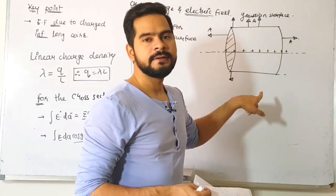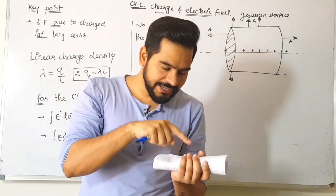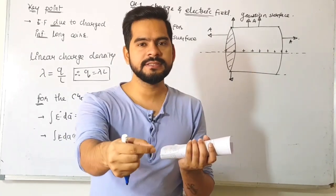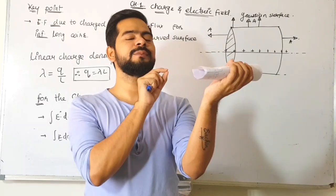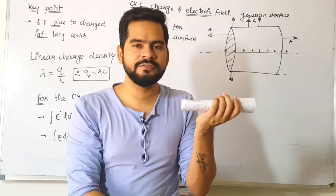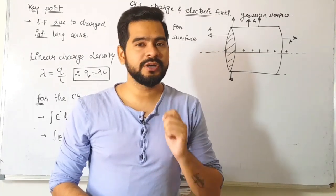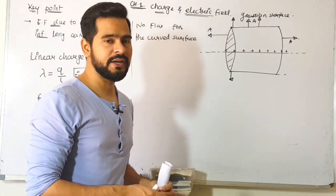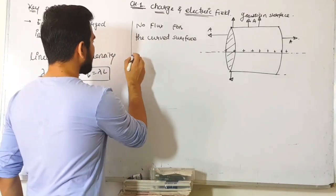We have only the curved surface left. Here electric field and area are both radially outward—same direction. Angle is zero degrees. If angle is zero, we get flux. So flux exists only through the curved surface.